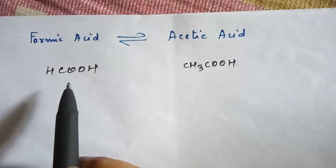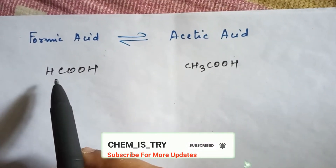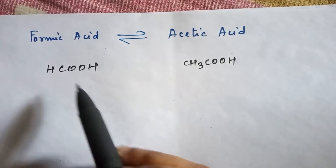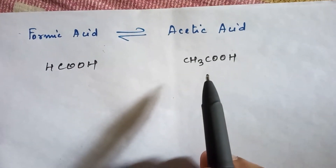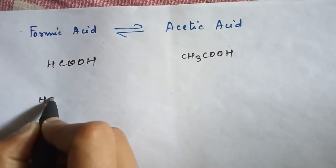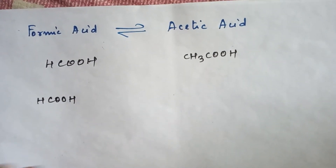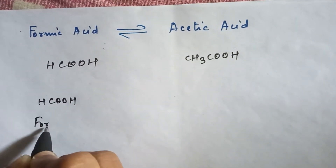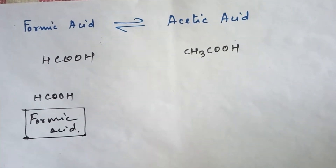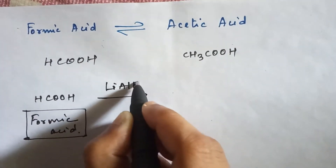First, let's convert from formic acid to acetic acid. You can see that formic acid has only one carbon atom, and acetic acid has two carbon atoms. So if you want to convert from formic acid to acetic acid, you have to increase the number of carbon atoms. Let's start the process with formic acid.